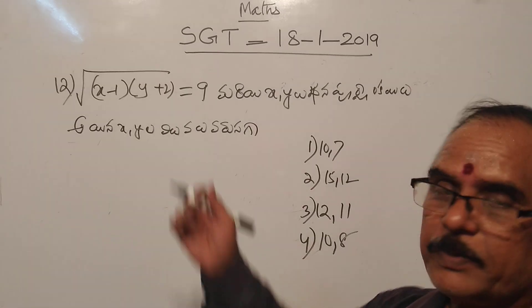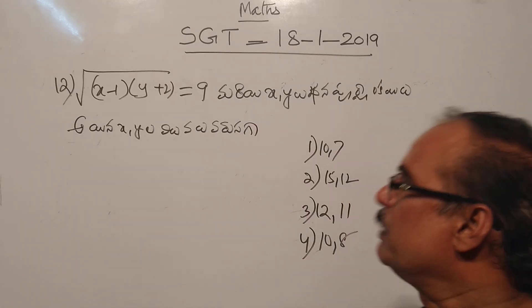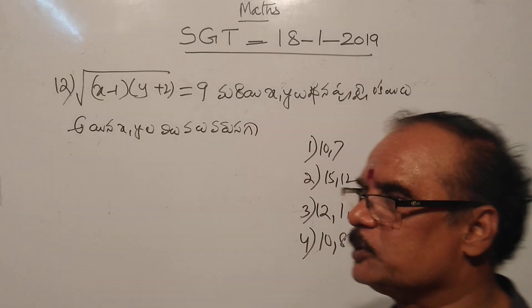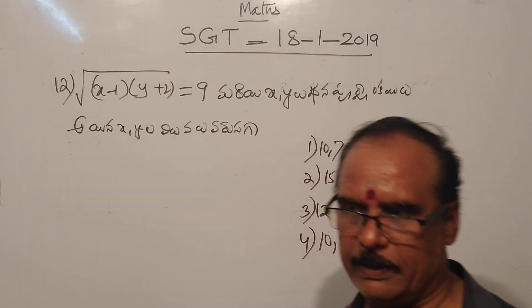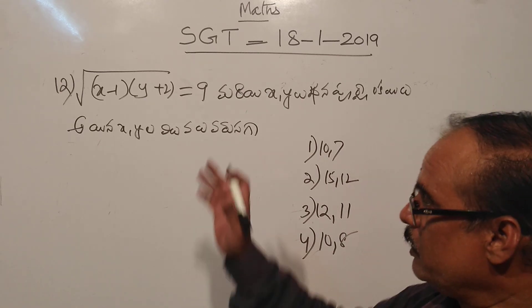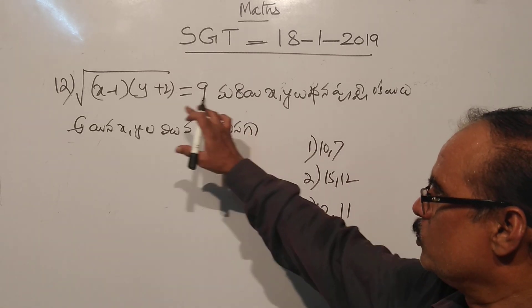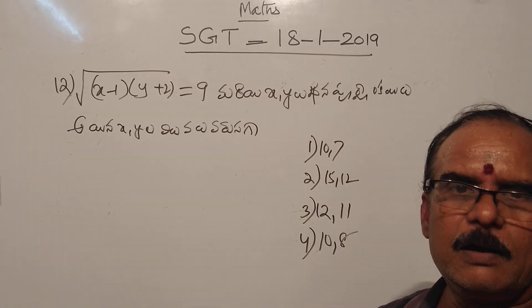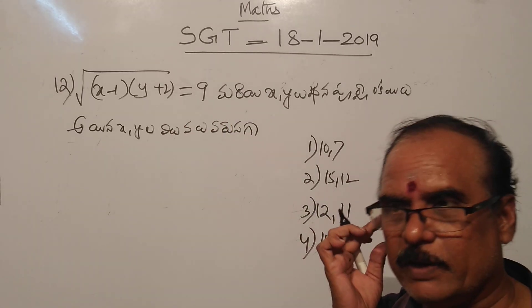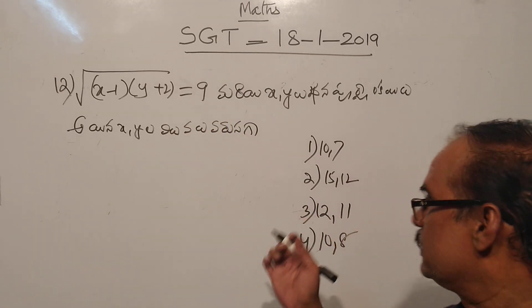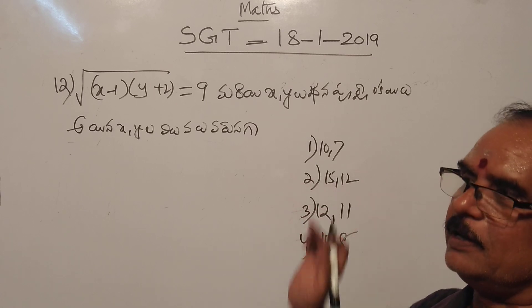Question 12. 2 of (x minus 1) into (y plus 2) is equal to 9. That will be xy equal to 9.